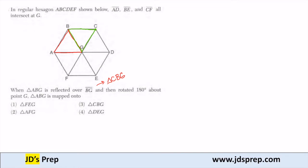Then we take triangle CBG, and that gets rotated 180 degrees about point G, which is our center. Since it's 180 degrees, the points are getting rotated across a straight line. So B is getting rotated 180 degrees, which results in point E. C gets rotated 180 degrees about point G, and that gets sent to point F. G is getting rotated 180 degrees about itself, so that stays at point G. What results is triangle FEG.